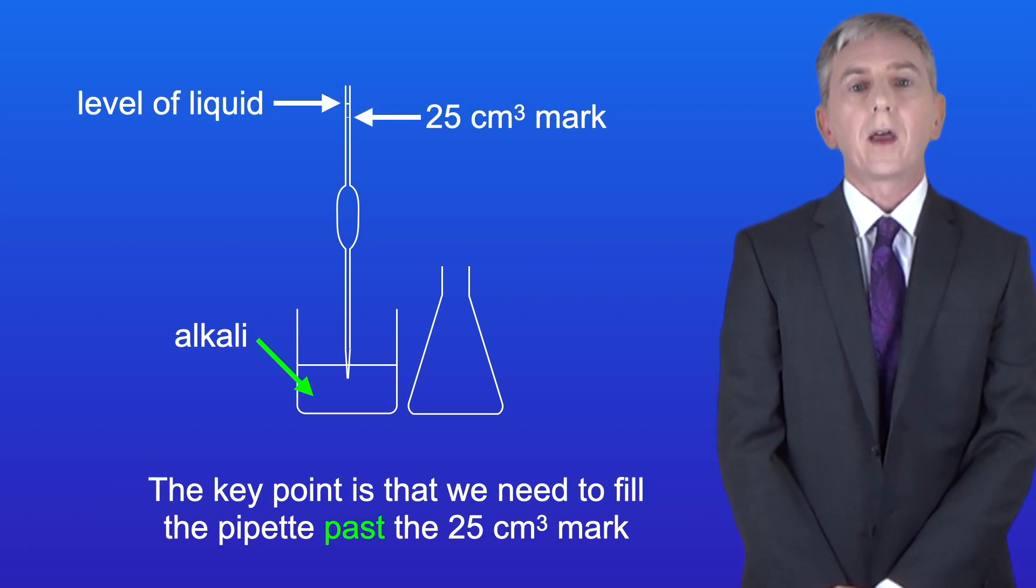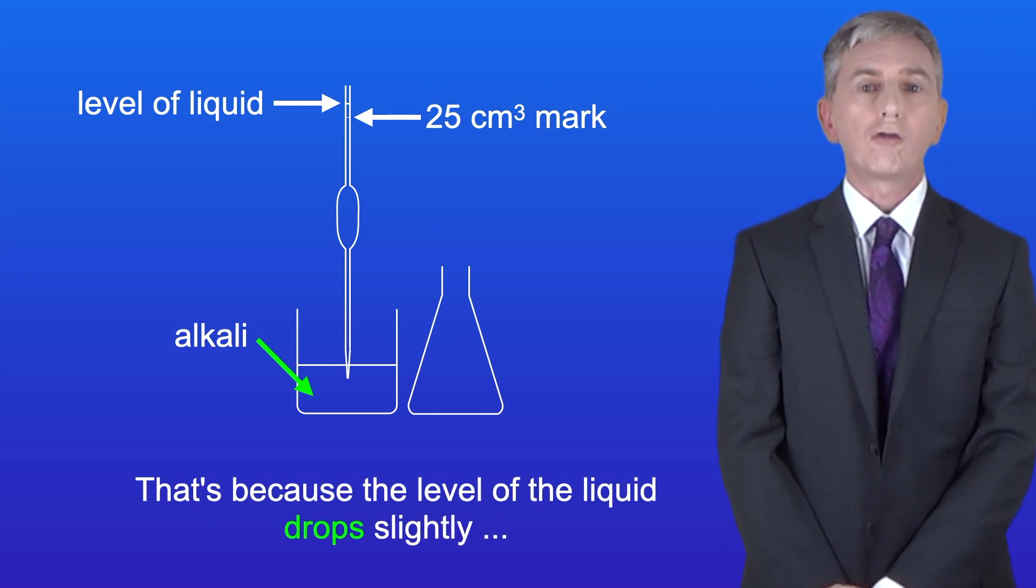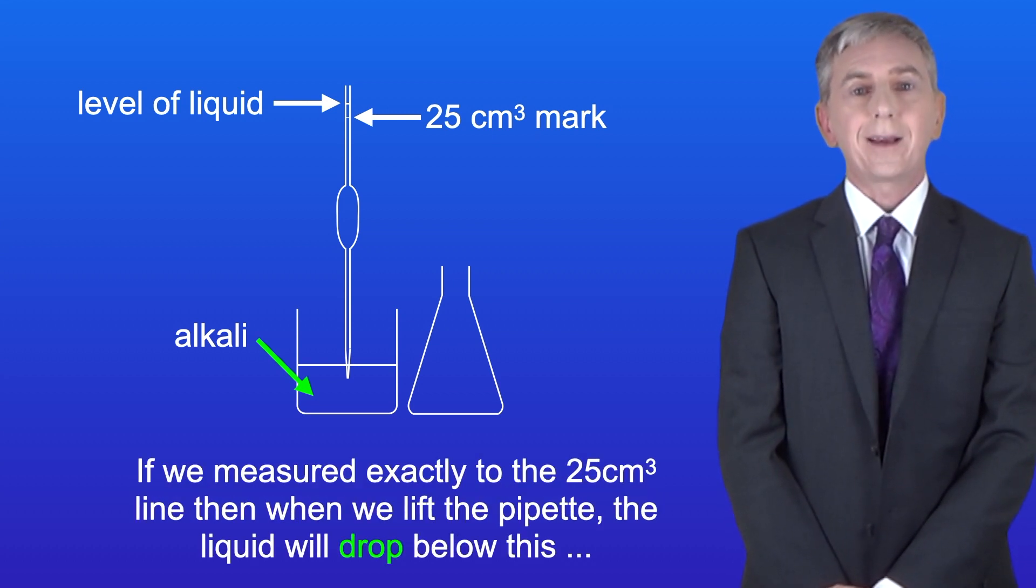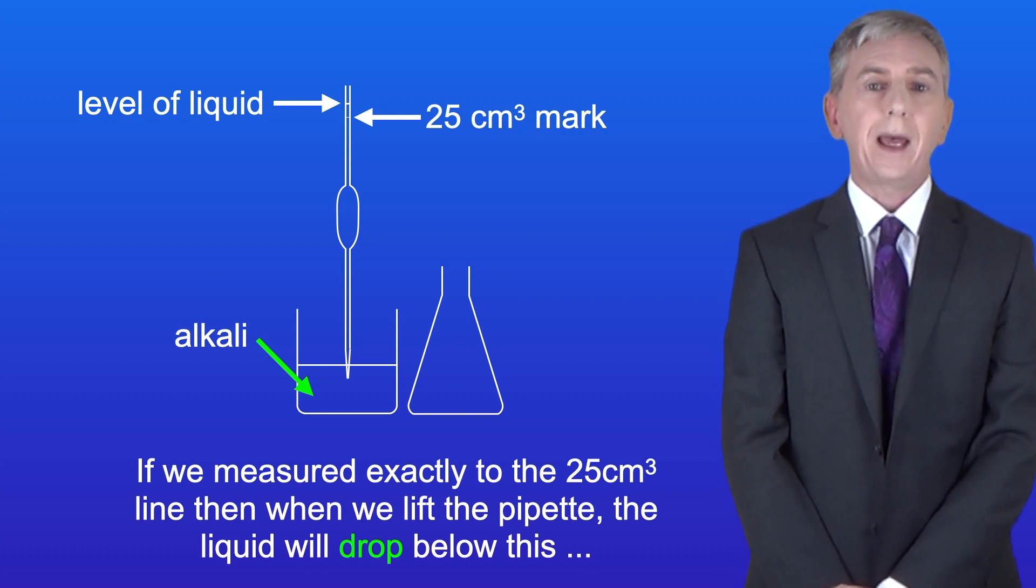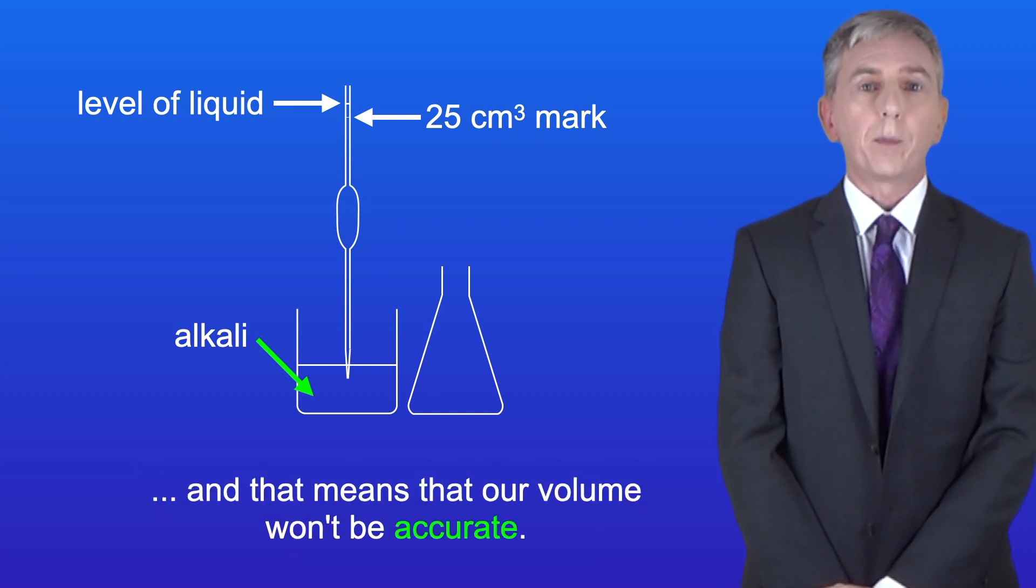Now the key point is that we need to fill the pipette past the 25 cm³ mark. That's because the level of the liquid drops slightly when we lift the pipette out of the alkali. If we measured exactly to the 25 cm³ line then when we lift the pipette the liquid will drop below this and that means that our volume won't be accurate.